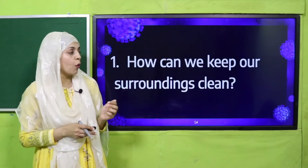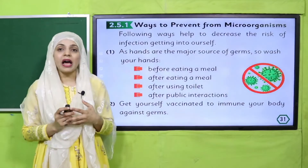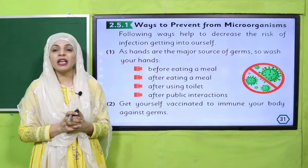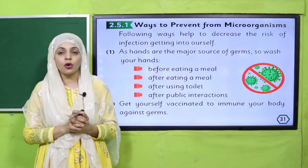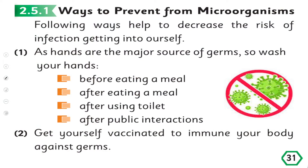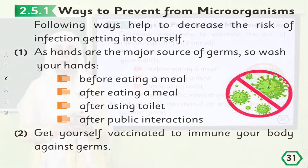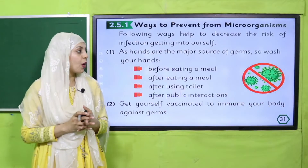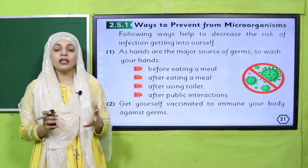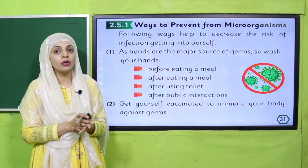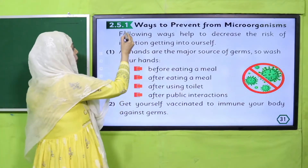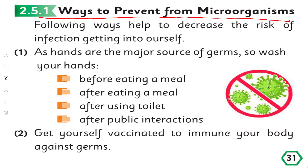Please open page number 31 in your Science 5 books. I hope all of you have opened the books. Now let's start reading. Put your fingers where I read: 'Ways to prevent from microorganisms. Following ways help to decrease the risk of infection getting into our cells.'